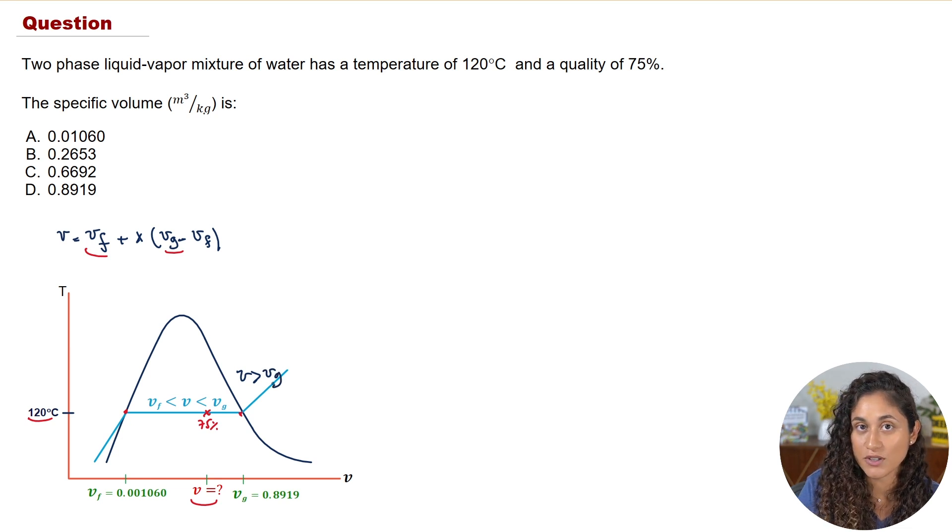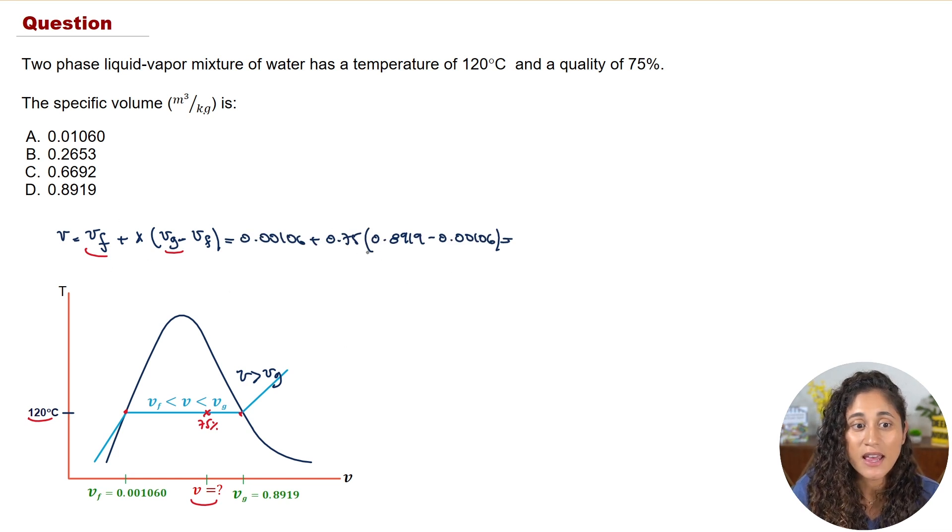Now if you guys plug in the numbers into the equation this is what you're going to get. For the quality make sure that you guys divide it by 100, so don't use the percentage. If you guys plug in these numbers into your calculator you're going to get 0.6692. If we take a look at the multiple choice the answer is going to be C. For the units we're going to have cubic meters per kilogram, that's the unit of specific volume, and also every term in the equation has the units of cubic meters per kilogram.